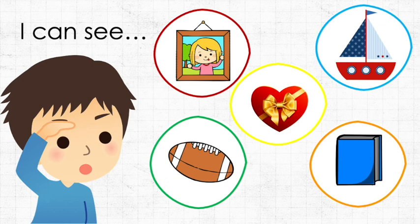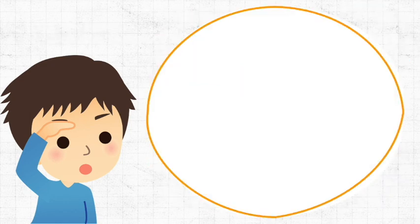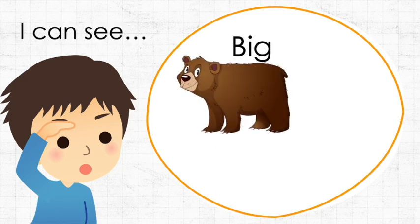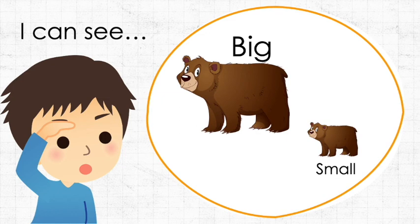Our eyes help us see all these things, and also because of our eyes we can see sizes like big and small, just like this bear. The mama bear which is a big bear and the baby bear which is a small bear.